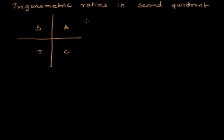Let's learn about trigonometric ratios in the second quadrant. In the second quadrant, anything above 90 degrees and less than 180 degrees comes in the second quadrant.